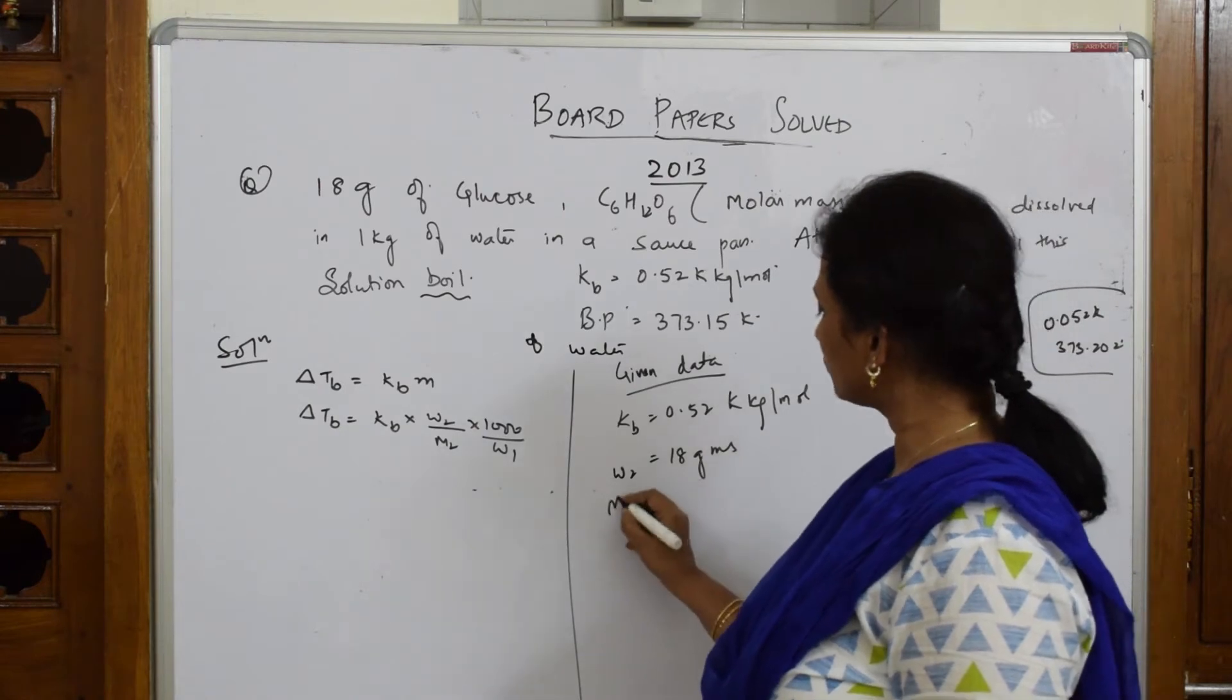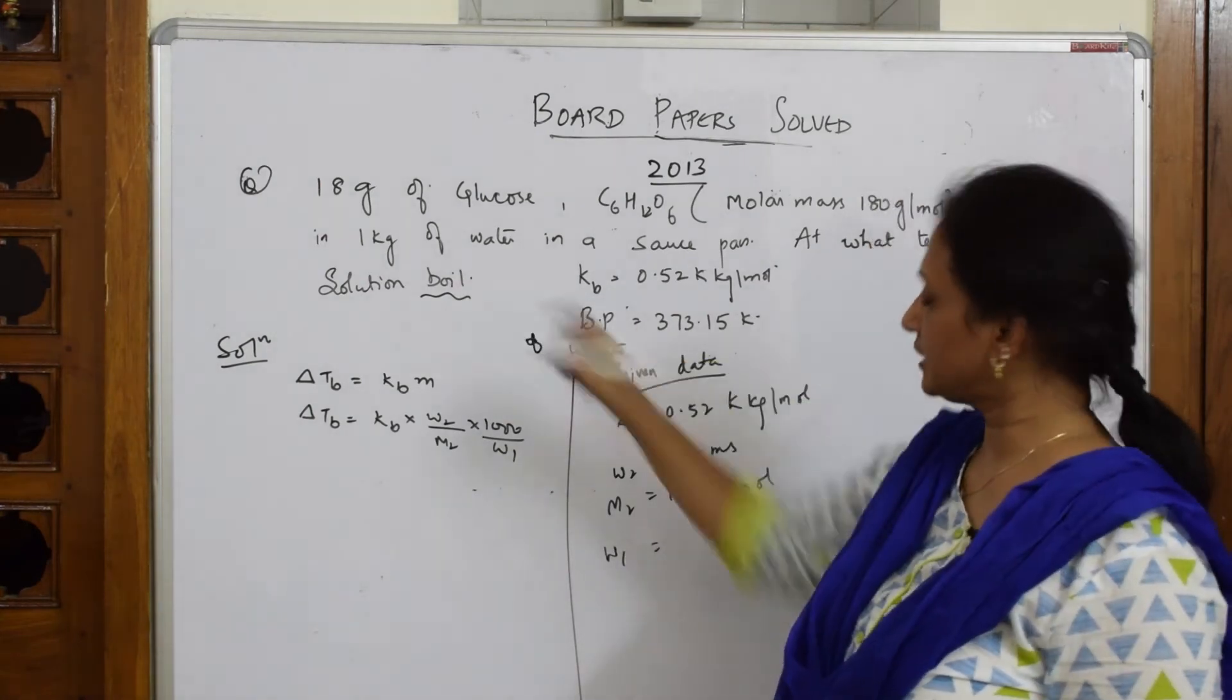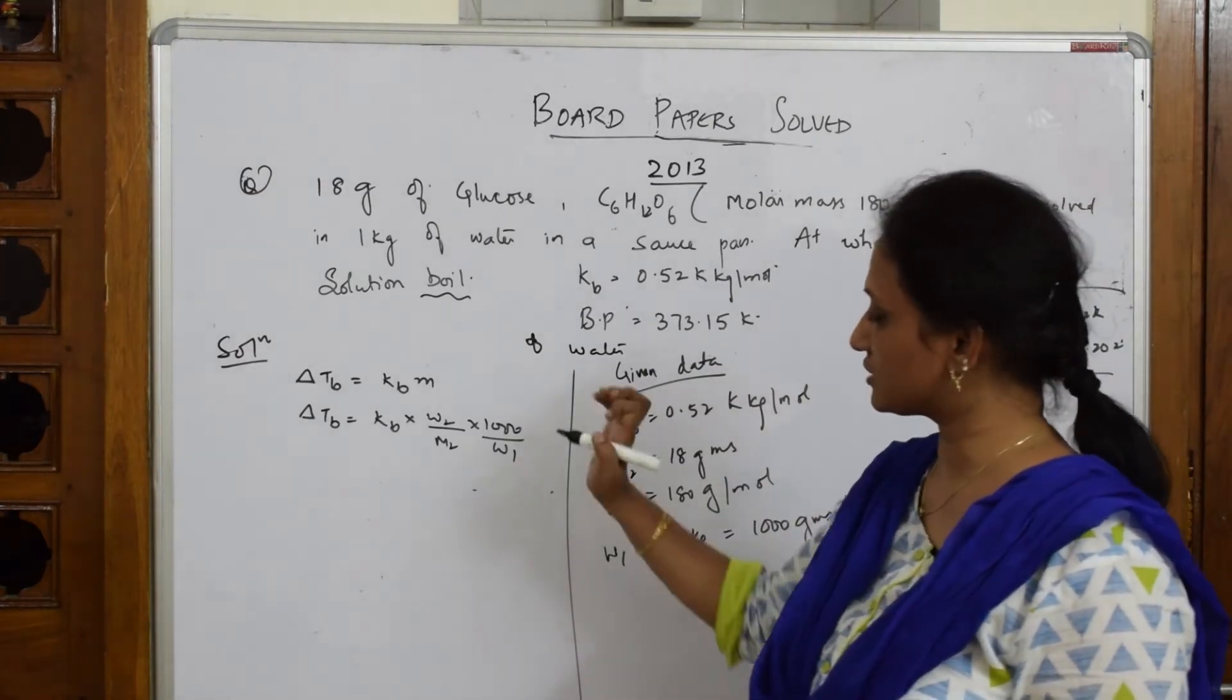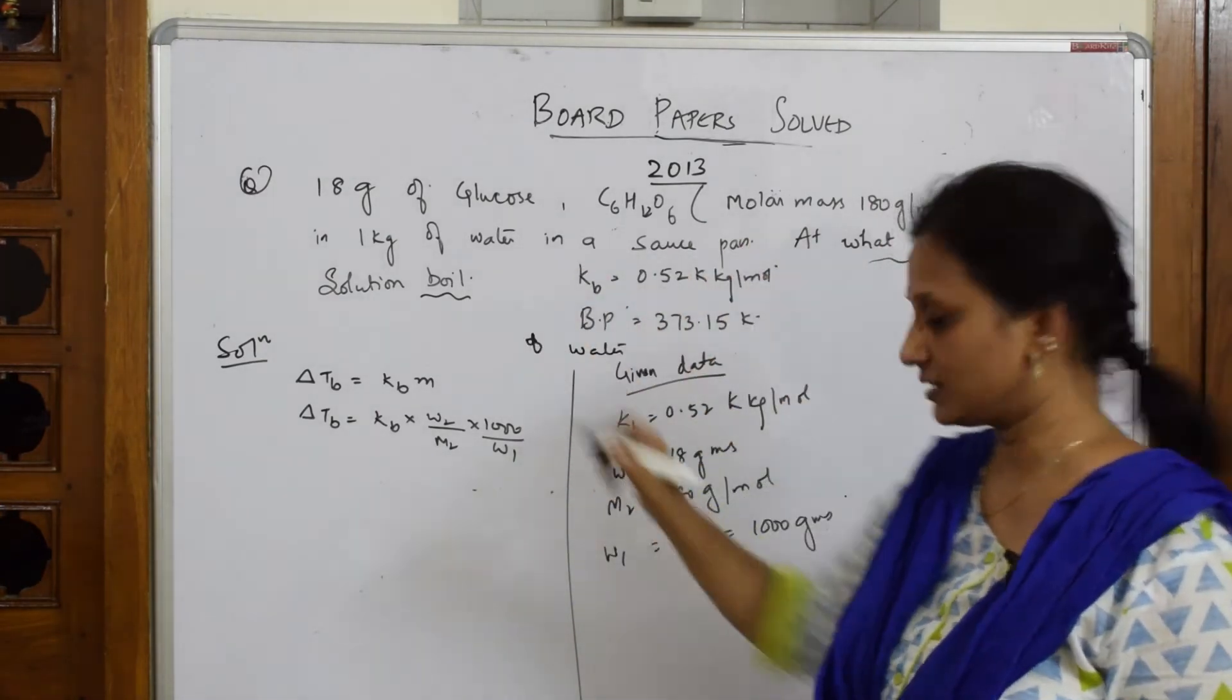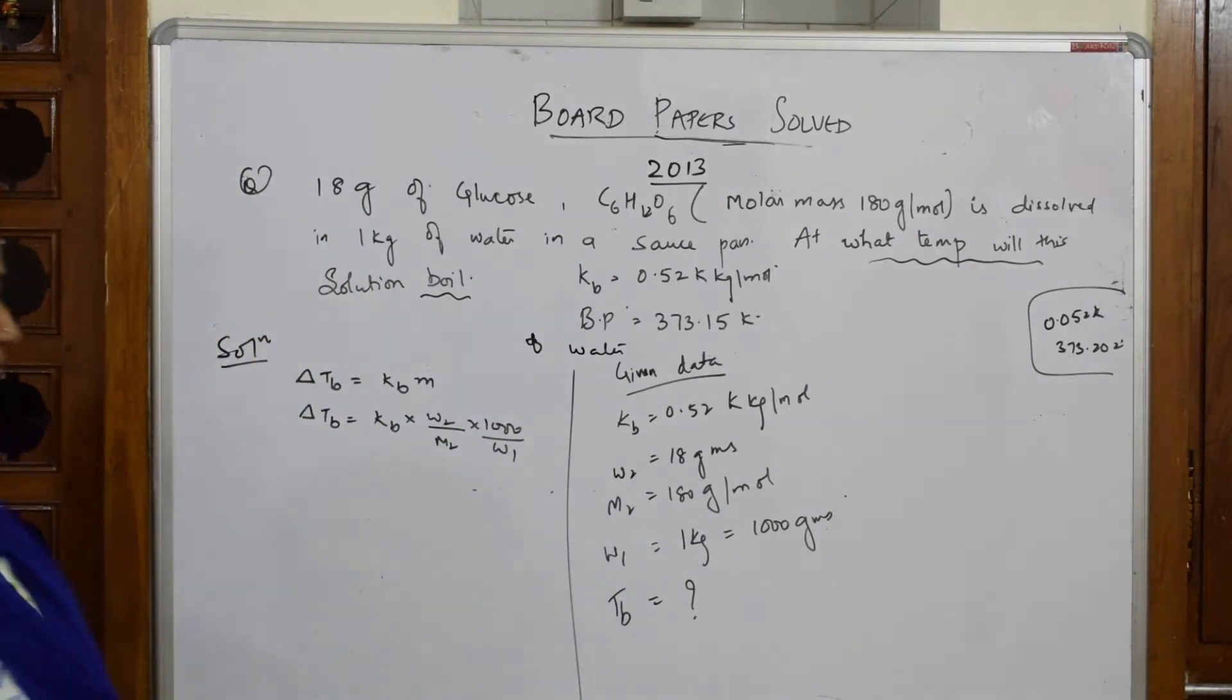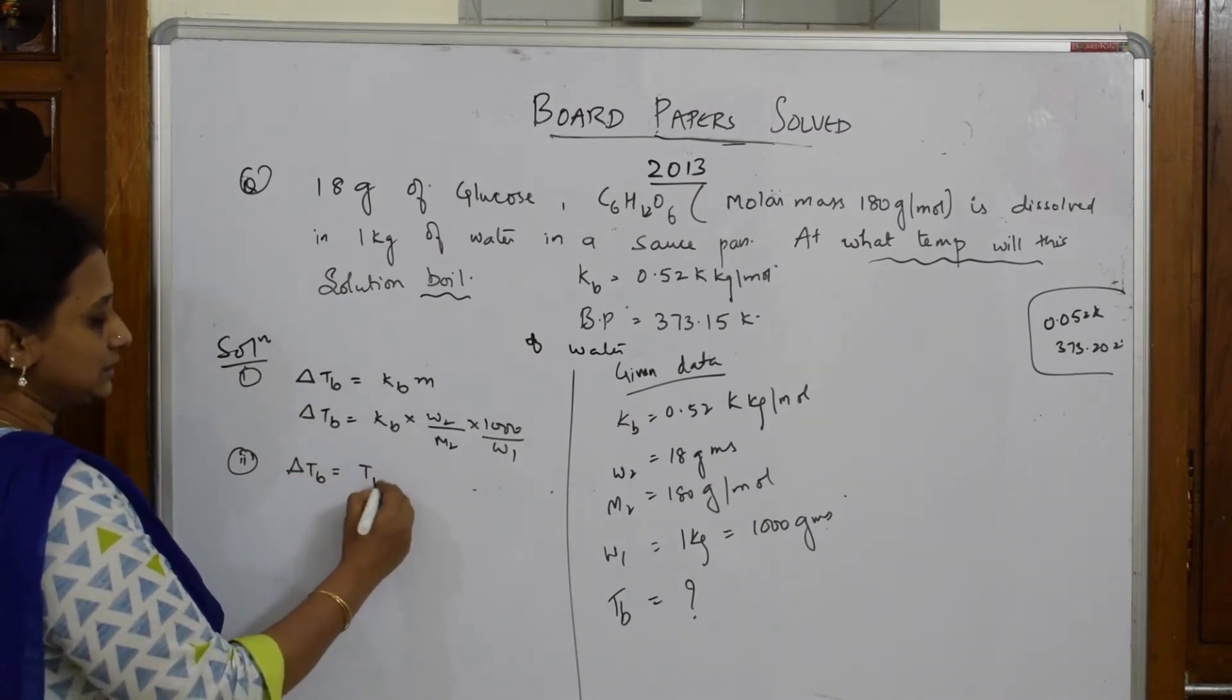M2 is 180 gram per mole. W1, weight of solvent, is given as 1 kg which is equal to thousand grams. What else should I find out? I have to find out at what temperature will it boil. That means I have to find Tb, the boiling temperature.